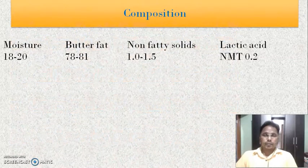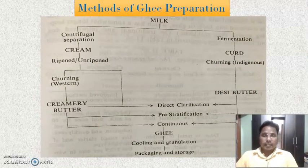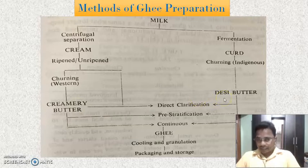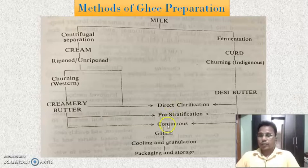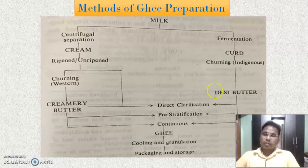We have also seen the various methods of tea preparation: the Creamery Butter method, Desi Butter method, direct clarification method, phrase stratification method, and the continuous method. These are the five methods, and out of these, we have completed the first method, that is the Desi Butter method, how ghee is prepared by the Desi method.